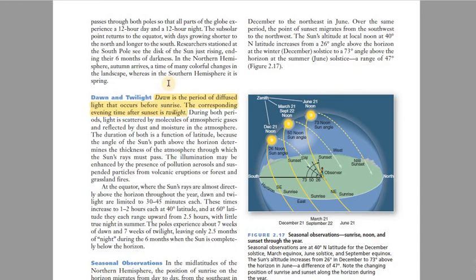Now let's discuss two important terminologies regarding sunrise and sunset: dawn and twilight. Both are timings of diffused sunlight — not direct sunlight. Dawn is the time of diffused light before sunrise, what we also call 'Subh Sadiq' in the morning. Twilight is the time which comes after sunset.